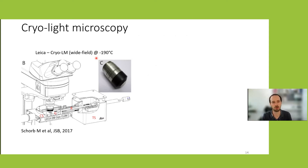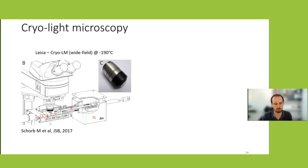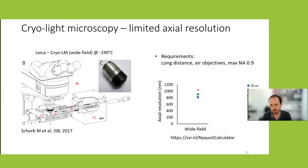Cryo-light microscopy was developed partly in Martinsried and at EMBL by the Briggs group. The Leica cryo-light microscope uses a 50x lens with NA 0.9. Because the samples must be kept at –190°C and the objective is not actively cooled, long working distance lenses are used — meaning no immersion oil and a compromise in resolution. The XY resolution is acceptable, but the axial resolution is the main problem, especially for targeted milling or lamella correlation.